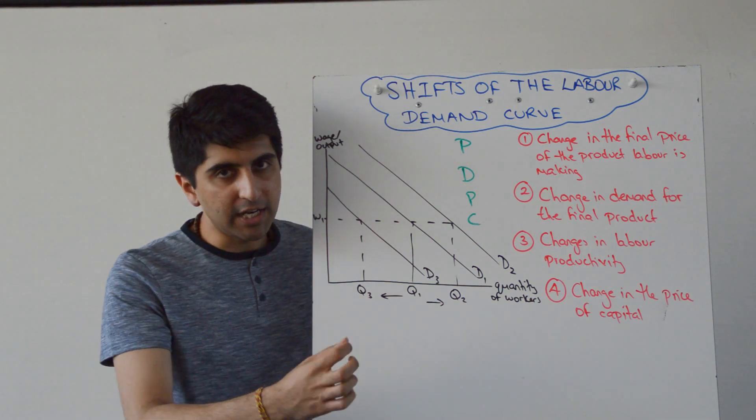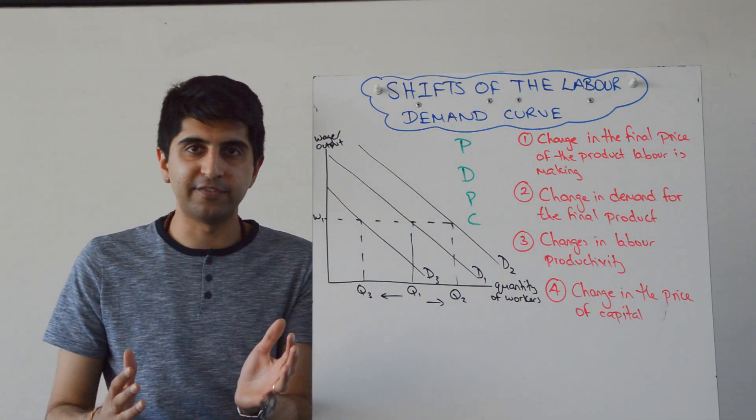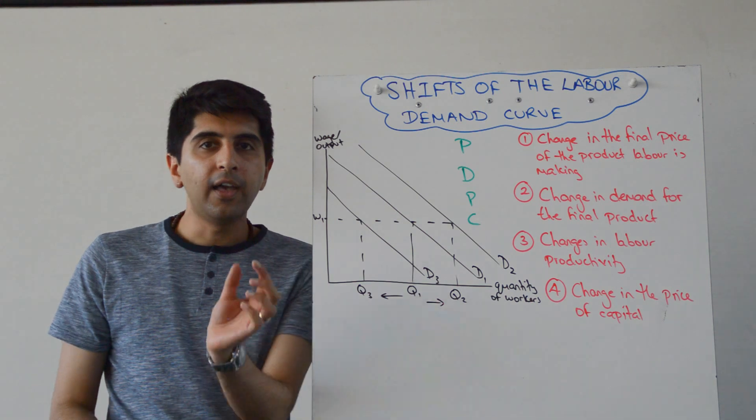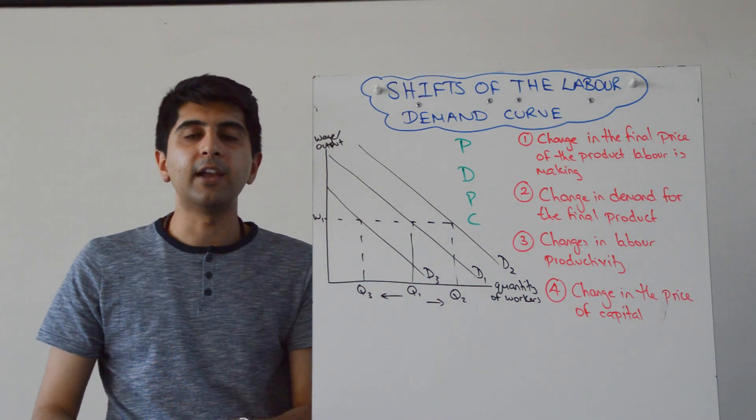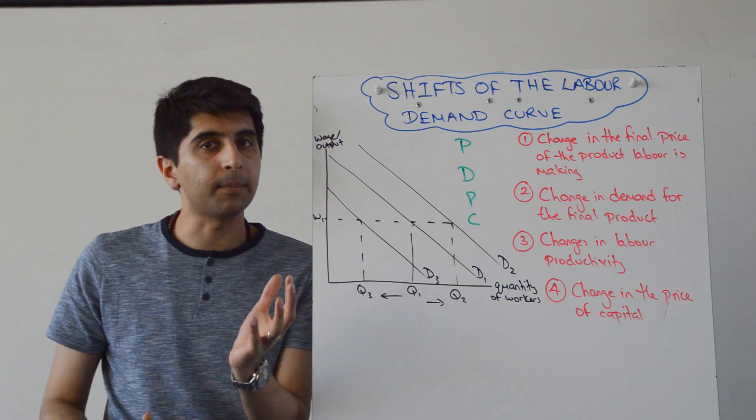And the C is a change in the price of capital. We know that in the long run, all factors of production are variable. So in the long run, a firm has got a big decision to make whether to hire more workers or whether to hire more capital. The two are substitutable.